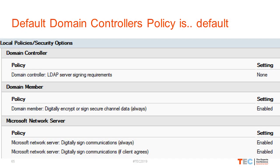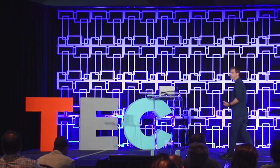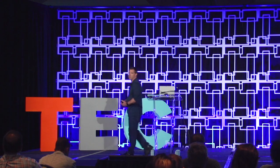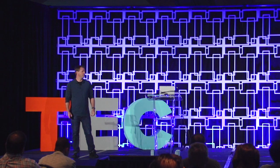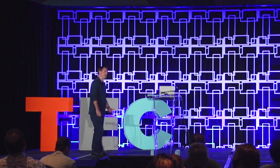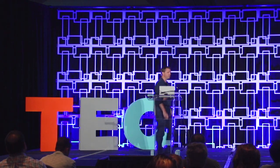Default Domain Controller policies are often still at defaults — very minimal security controls that haven't changed since early AD days. There are base policy settings from CIS and others that improve AD security significantly. Many organizations still have NTLM configured to allow LM and NTLMv1, which is problematic from a security perspective.